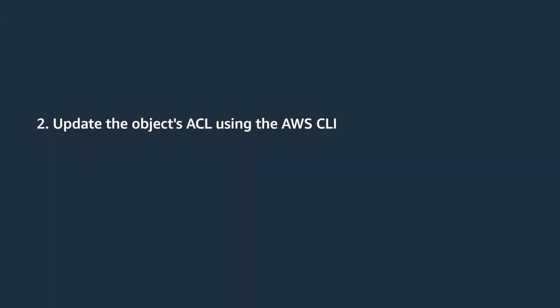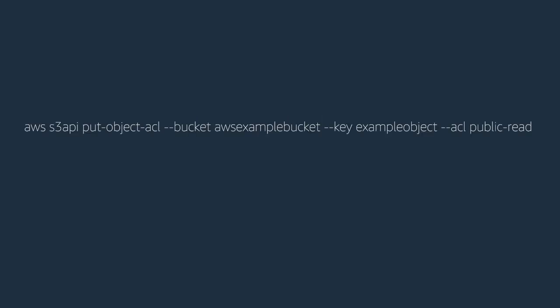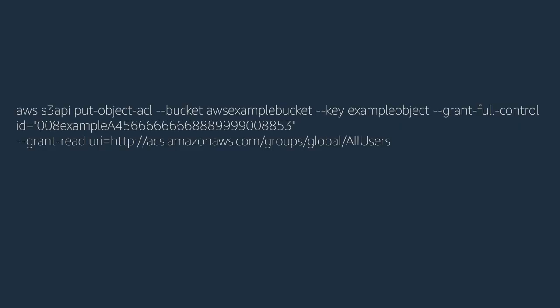The second method to make some objects public in your bucket is to update the objects ACL using the AWS CLI. For an object that you have already stored in your Amazon S3 bucket, you can run this command to update its ACL for public read access. Or if you have uploaded an object to a cross-account bucket, you can run this command to grant full control of the objects to the cross-account owner and read access to everyone else. For the value of --grant-full-control, enter the cross account's canonical user ID.